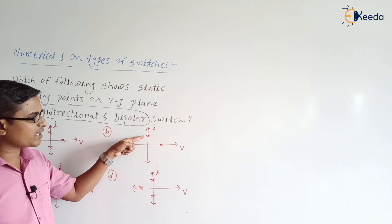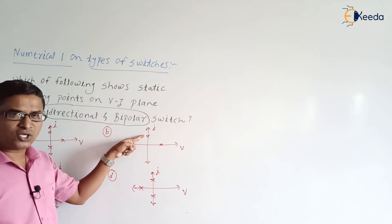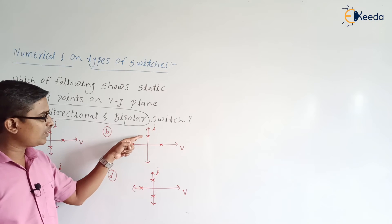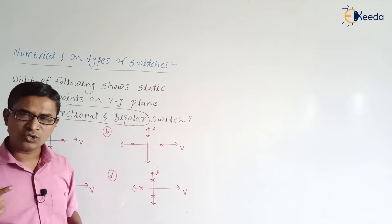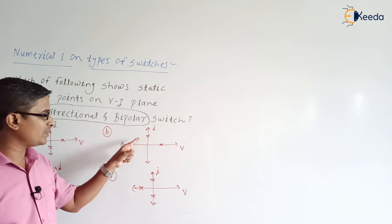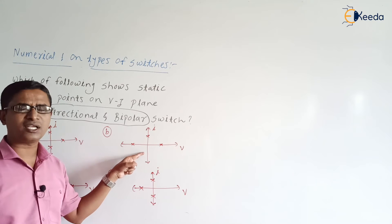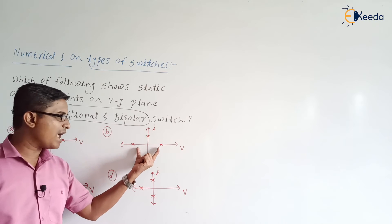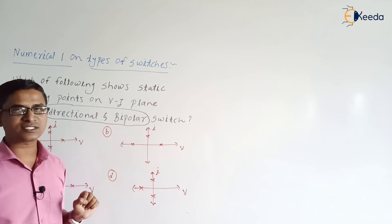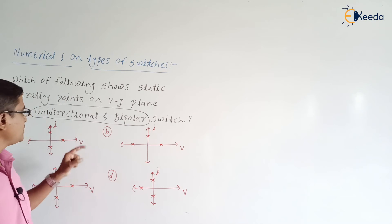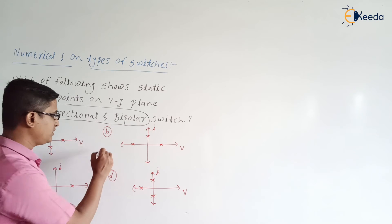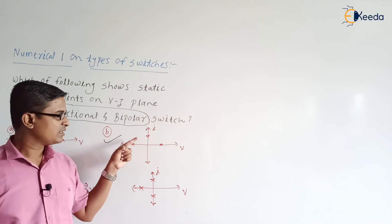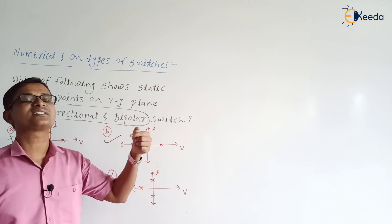Now, corresponding to the third point, the current is positive and the voltage is zero. Voltage zero means switch is in the on state and the switch is allowing current in only one direction. The same point does not lie on the negative current axis, so the switch is unidirectional. These points indicate it is a bipolar switch; this point indicates it is a unidirectional switch. So this is the unidirectional and bipolar switch.